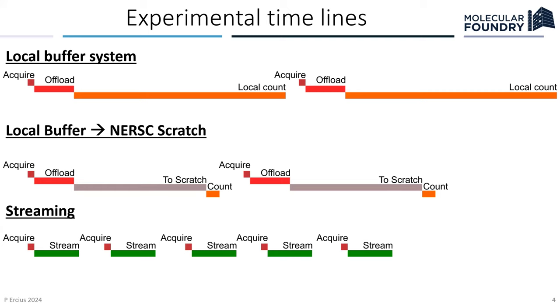And how does this really affect us? This is our old way of doing it. The local buffer system where someone would press acquire and these are all to scale. This is how long it takes to acquire a data set. The thing that the user actually sees and they're like, okay, I have data. What do I do with it now? It took this long to offload the data onto our local buffer system. And then we had to do local counting where the whole system is being engaged during all of this time.